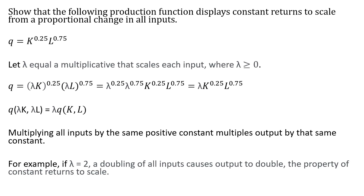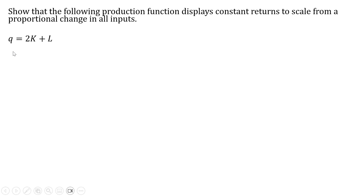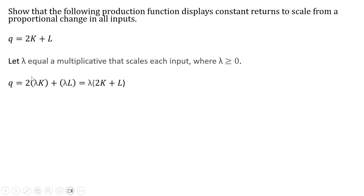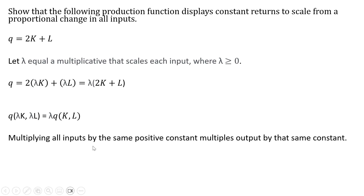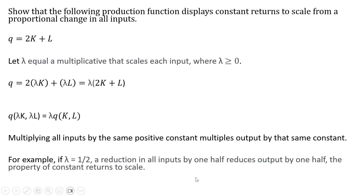Let's do another example with a slightly different production function. Multiplying each input by lambda, we can factor out the lambda, and that shows us once again that multiplying all inputs by the same positive constant multiplies output by that same constant. For example, if lambda equals 1.2, a 20 percent increase in all inputs increases output by 1.2 — the property of constant returns to scale.